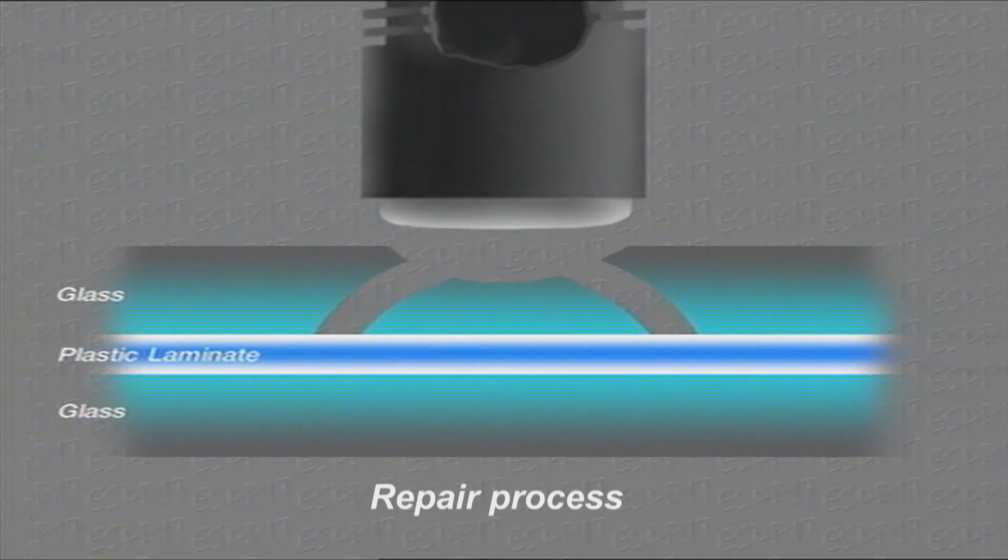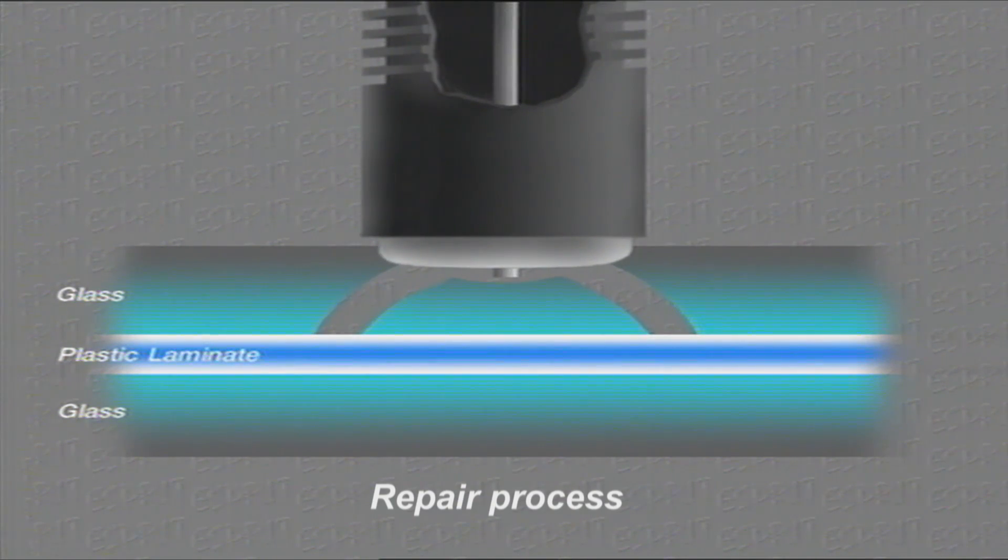The injector is inserted in contact with the screen. The ultraviolet resin is injected and runs part way into the damaged area.